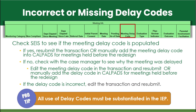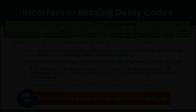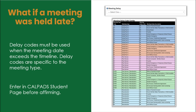Meetings may be misidentified as non-compliant if they have incorrect or missing meeting delay codes. Allowable delay codes by meeting type can be found in the CALPADS valid code combos. Delay codes must be documented in the comments or notes in the student's IEP. Delay codes are to be used when any meeting exceeds the compliance timelines. Pending transactions can be submitted with delay codes to report late meetings before meetings are held.